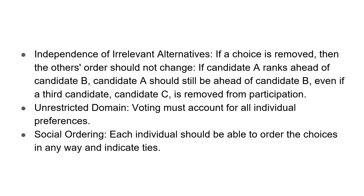The next condition is independence of irrelevant alternatives. It says that if a particular choice is removed, the other order should not change. For example, if candidate A ranks ahead of B, then A should still be ahead of B even if there is a third candidate C. And if you remove C from participation, that will not affect the ranking between A and B, because A is ahead of B everywhere.